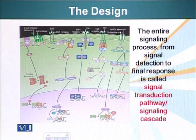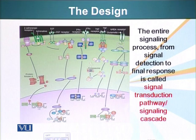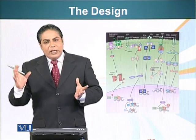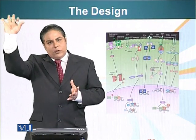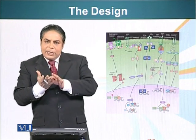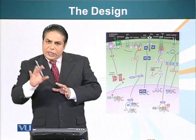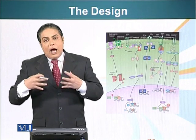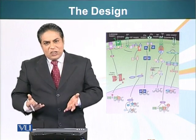So here is the signaling again — a brief overview. The entire process from signal detection to the response is called the signal transduction pathway or signaling cascade. The design is very simple: a receptor molecule acts as an antenna on top; a ligand or signaling molecule binds the receptor, and the change is conveyed to the cellular machinery, allowing the cell to modify its function.